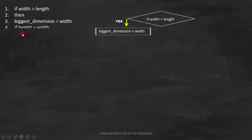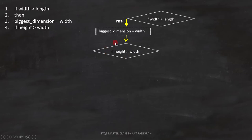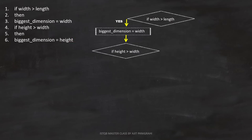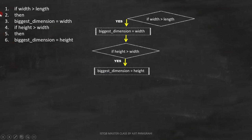Now let's analyze line 4: if height is greater than width. We have to continue with the same branch. And since it is a condition, we have to represent it like this. Now let's analyze the fifth and sixth lines: then biggest dimension equals to height. That means, if this condition is correct, biggest dimension equals to height. Until now, we have analyzed the first six lines of the code.